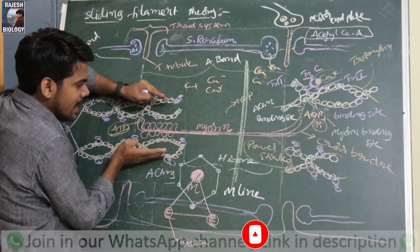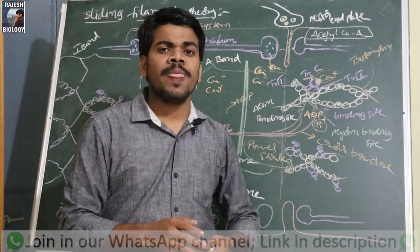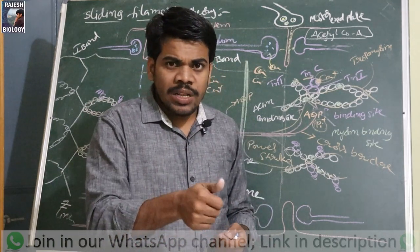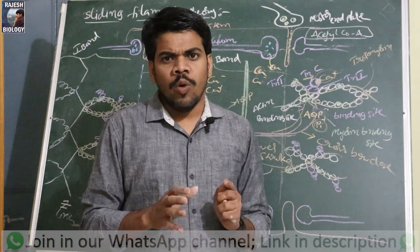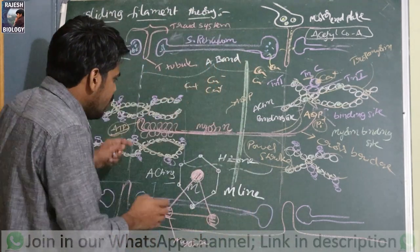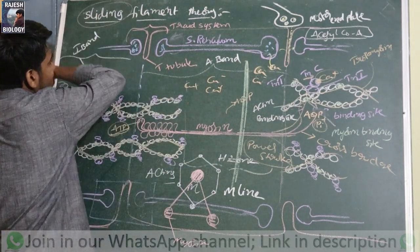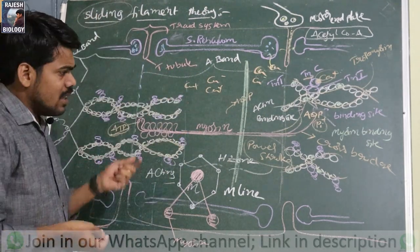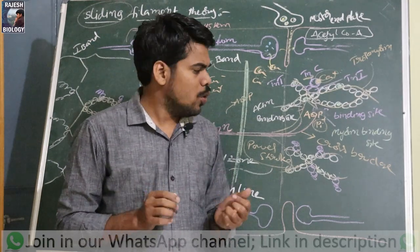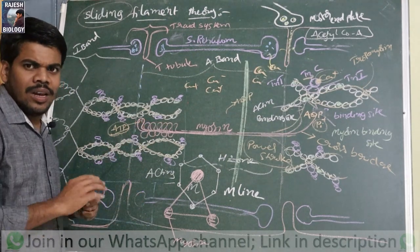In this process, actin slides over the myosin — that is why it is called the sliding filament theory. Like the old sliding mobile phones that slide over a keypad, the actin filaments slide over the myosin. The sliding filament theory was proposed by Jean Hanson and Hugh Huxley.